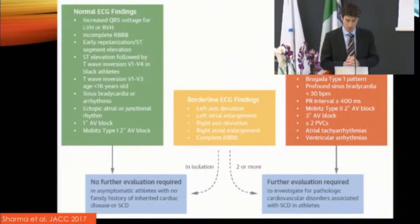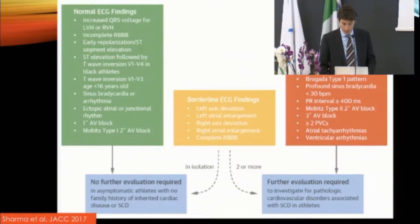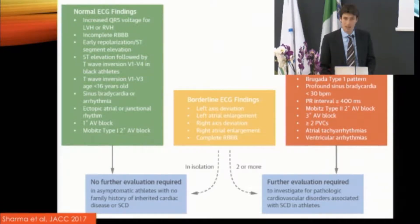We see that there are three boxes here. On the left, we have the green box with the normal ECG findings. In the middle, we have the orange box with borderline ECG findings. And on the right, we have the red box, which is the abnormal ECG findings.